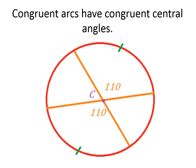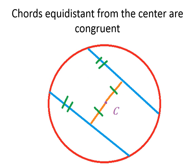Congruent arcs have congruent central angles. If we have congruent arcs, we can go back to our central angles and say they're congruent. If you remember how we usually measured our arcs — sometimes in angles — they really measure the central angles. So if the arcs are congruent, then obviously their central angles must be congruent as well.